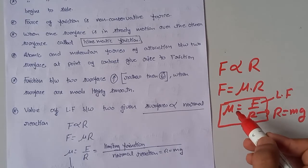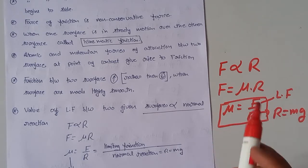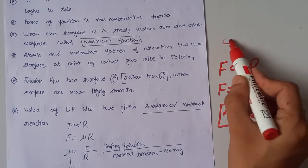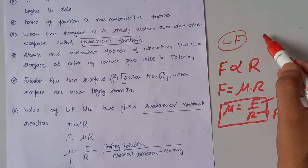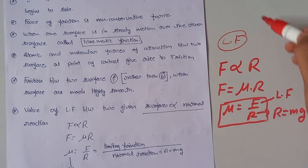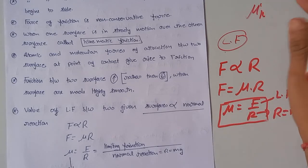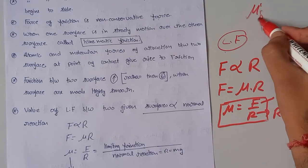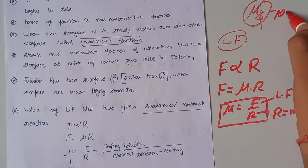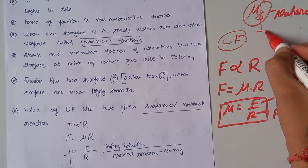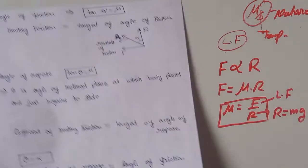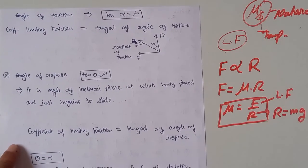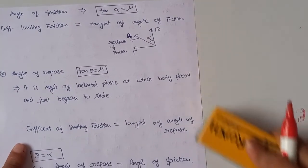The value of limiting friction is independent of the area of the surface of contact. The coefficient of static friction depends upon the nature of the object and temperature.